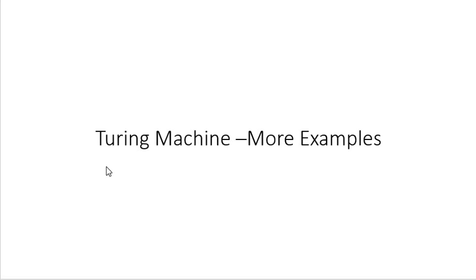Welcome all. In the last session we learned how to construct a Turing machine for the language L = a^i b^j such that i is equal to j. Today in this video session we are going to learn Turing machines for a few other languages. These languages are minor modifications of the language which we learned in the previous video.